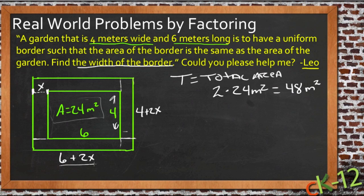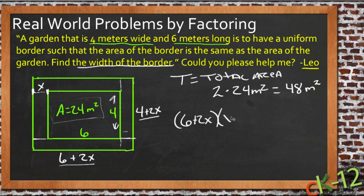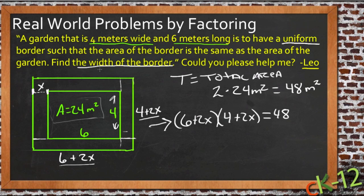So 6 plus 2x is the new length and 4 plus 2x is the new width. Then we can say that (6 + 2x) times (4 + 2x) equals 48. Now we can simplify some of our information. This was the hard part, trying to get to this point right here. Recognize that the information told us we're going to add the same amount around all the way around the outside—that uniform border was a big deal. And knowing that the width of the border is what we're looking for was a big deal because that's how we knew what to assign our variable to.